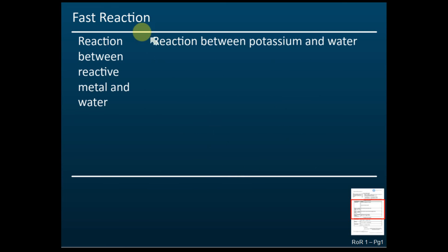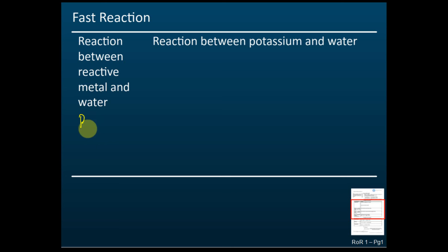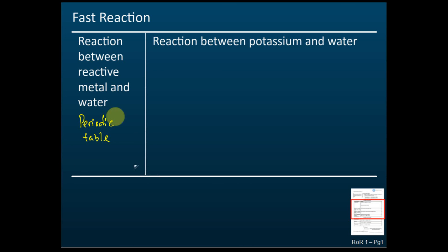The second type of fast reaction is the reaction between reactive metals and water. You have learned this in the periodic table topic — all Group 1 metals can react with water to form alkali and produce hydrogen gas. This is a fast reaction.